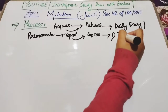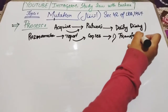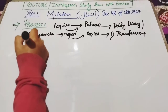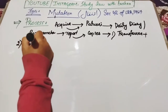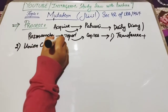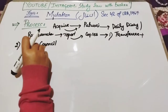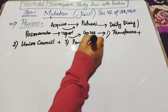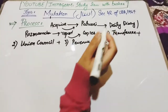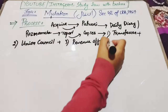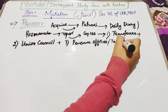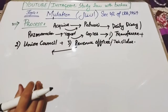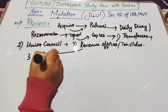The patwari sends three copies: the first copy is sent to the transferee — the person who has acquired the property — free of cost. The second copy is sent to the union council and the town committee of that area. The third copy is sent to the revenue officer or tehsildar of that area.